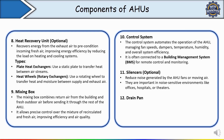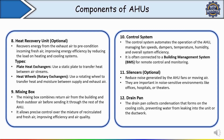The next component is the drain pan. The drain pan collects condensation that forms on the cooling coil, preventing water from leaking into the unit or the ductwork. In a humid climate, the AHU drain pan collects excess water that condenses on the cooling coils, preventing water damage to the unit and the building interior. The water is drained away through a piping system to prevent mold growth or system damage.